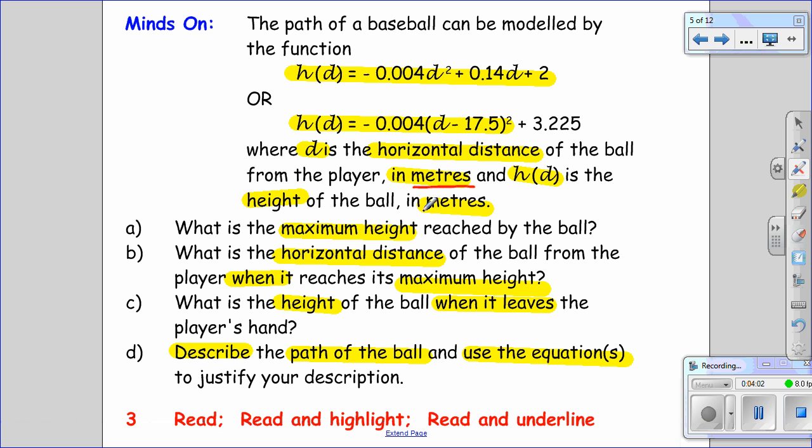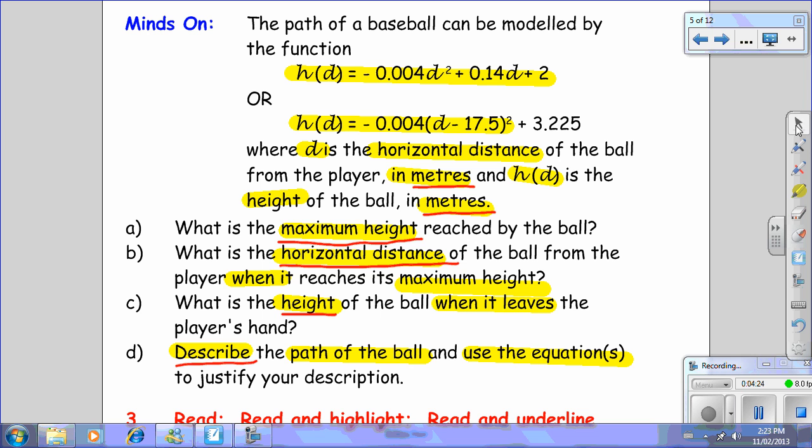We're going to underline our units so we make sure we answer everything correctly. Part A wants us to find the maximum height of the ball. Part B wants the horizontal distance of the ball when it reaches its maximum height. Part C wants the height of the ball when it leaves the player's hand. And Part D wants me to describe the path of the ball and use the equations to model it.